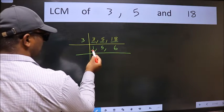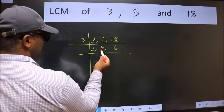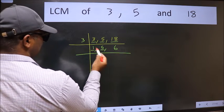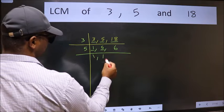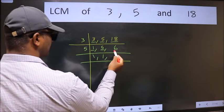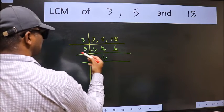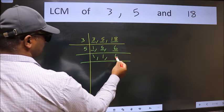Now we got 1 here so focus on the next number 5. 5 is a prime number so 5 wants 5. The other number 6 is not divisible by 5 so we write it down as it is.